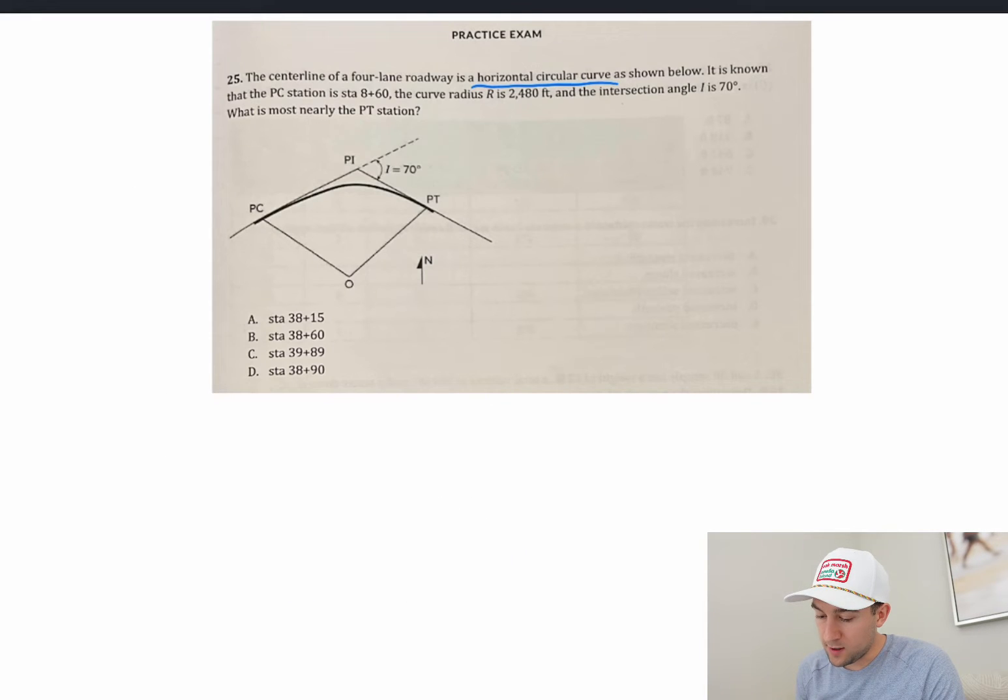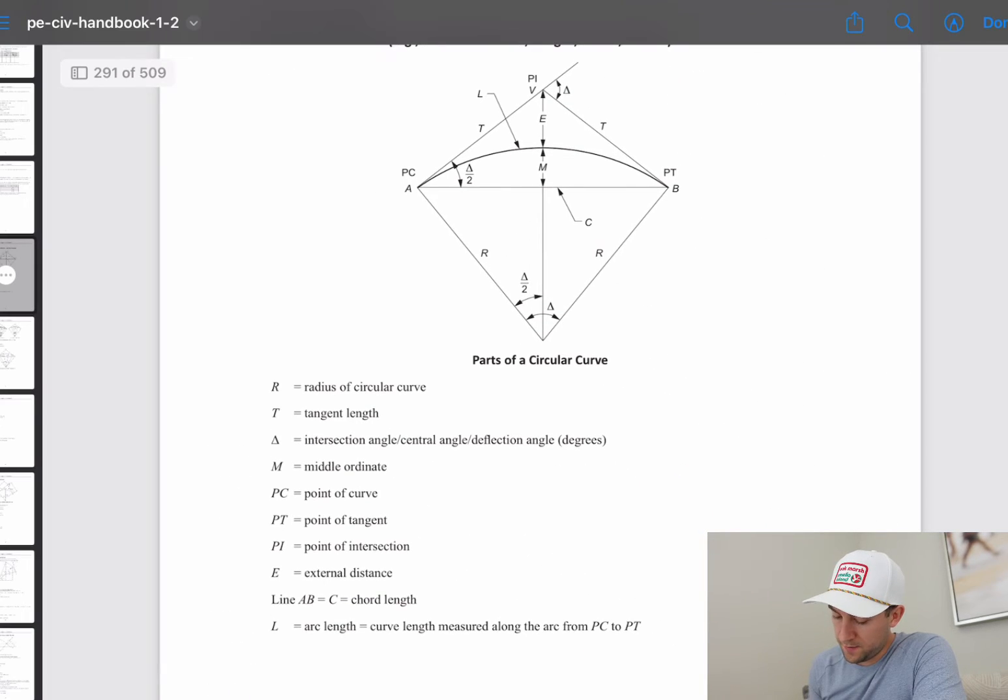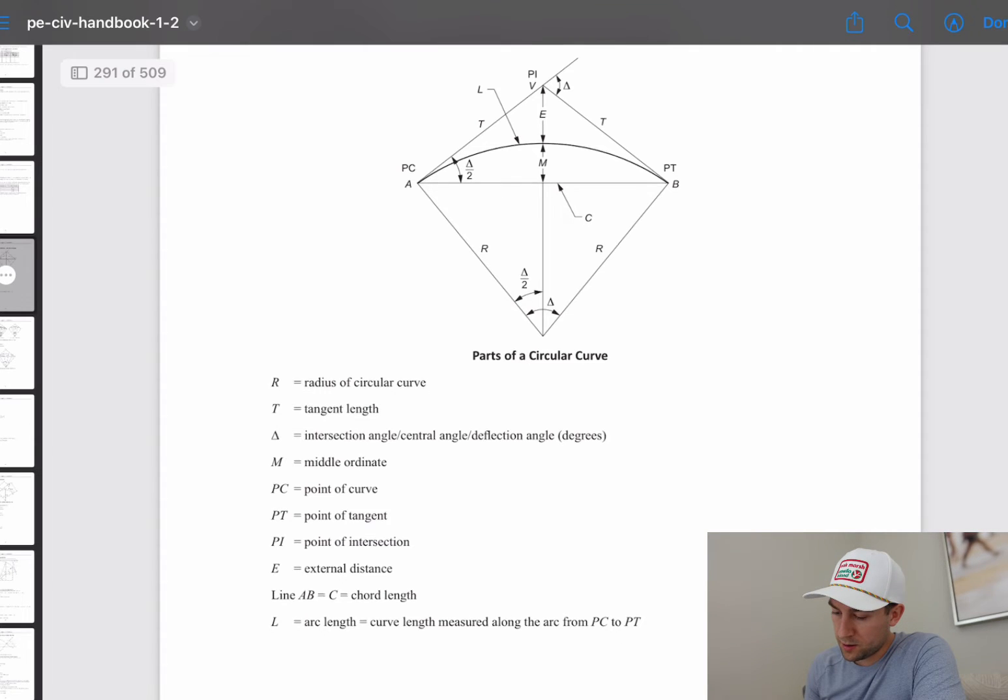So again, it's asking what is most nearly the PT station. And it's given a whole bunch of knowns in this problem. So based on what we just saw from the reference manual, if we find the equation for L, maybe we can start figuring some stuff out.